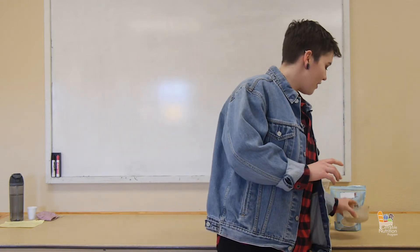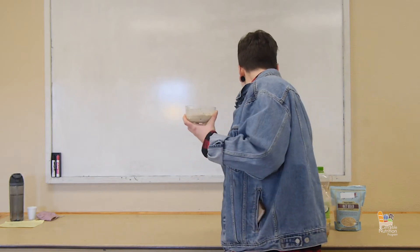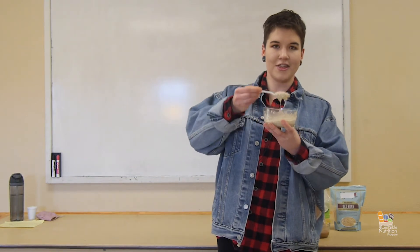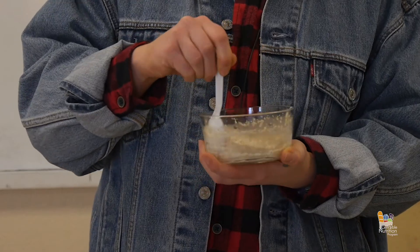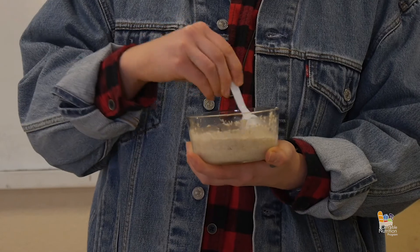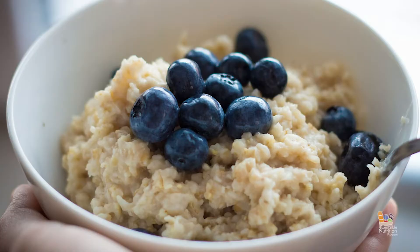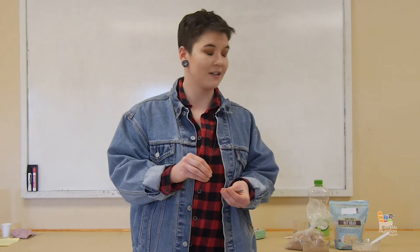Soluble fiber, on the other hand — you'll notice it has formed a thick paste. What's cool about soluble fiber, like that found in oats, beans, fruits, and vegetables, is that it soaks up any fats in our system and promotes their excretion as waste.